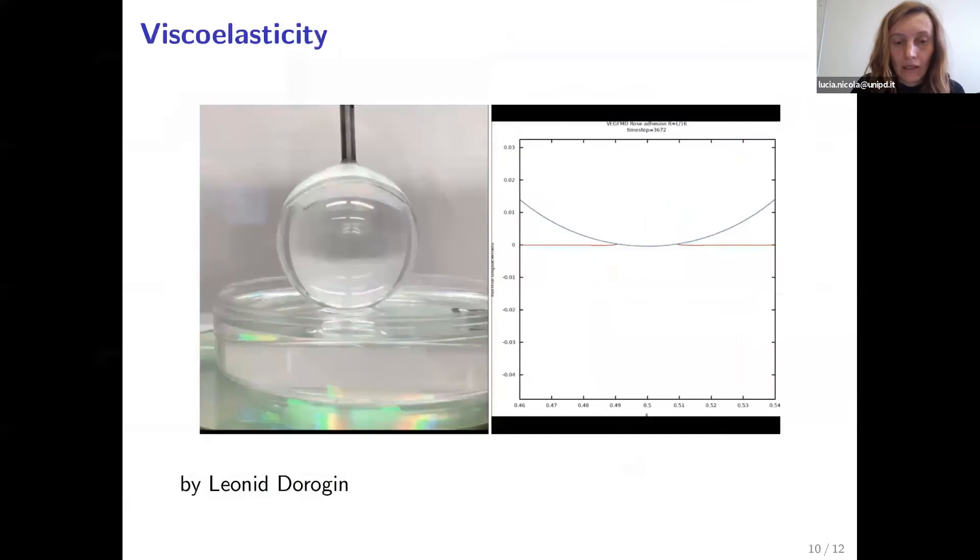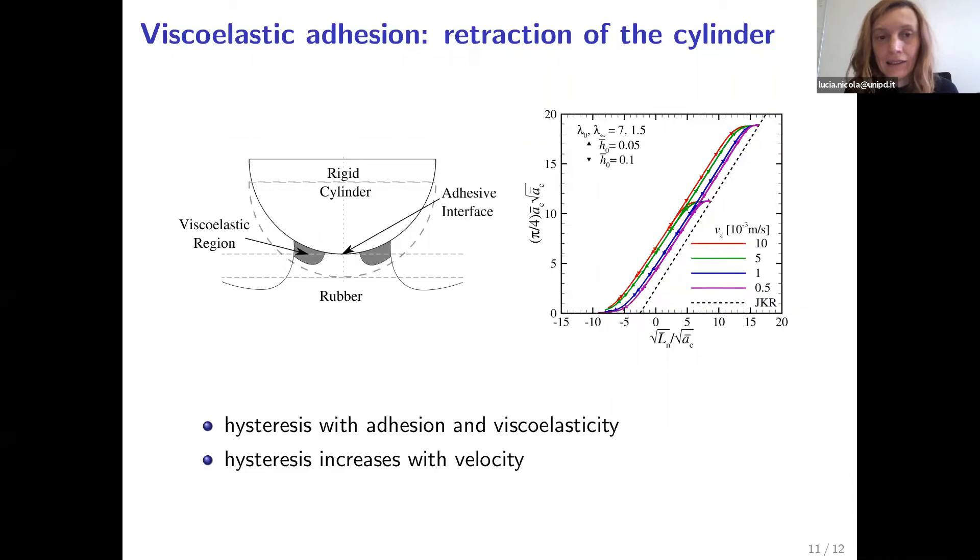Now, what we do in the simulation is that we retract the cylinder from the viscoelastic material with different speeds. And when we change the retraction speed, we are also changing the speed with which the contact is losing adhesion. So we are changing the speed of the edge of the contact. And by doing so, we have a material that very close to the peeling edge behaves almost glassy, and it behaves adiabatically far away from the edge of the peeling contact.